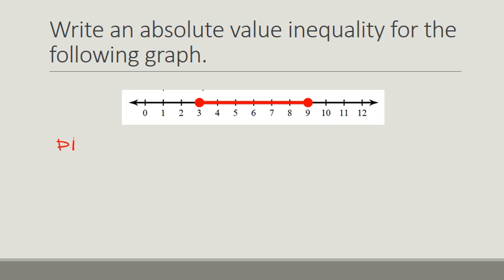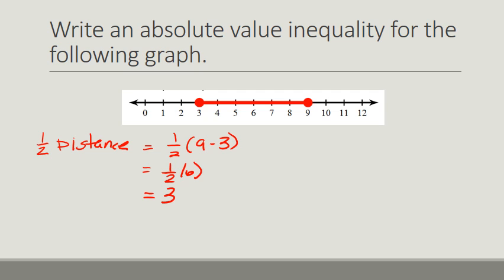For the next graph, let's find half the distance: one half of 9 minus 3 is one half of 6, which is 3. So our midpoint is 3 units from each point, making the midpoint 6. Our inequality is the absolute value of x minus 6. This time, all of our distances — which are 3 and 3 — are going to be less than or equal to 3. So everything in the solution is less than or equal to 3 points from 6, giving us: absolute value of x minus 6 is less than or equal to 3.